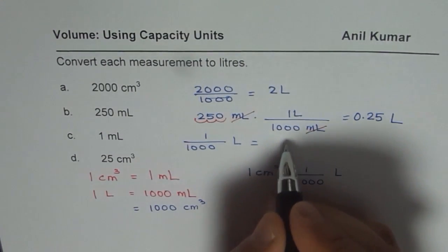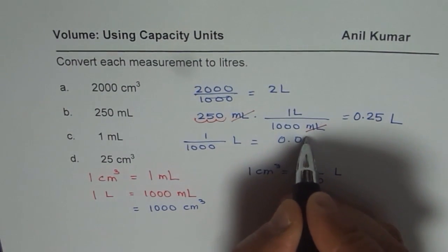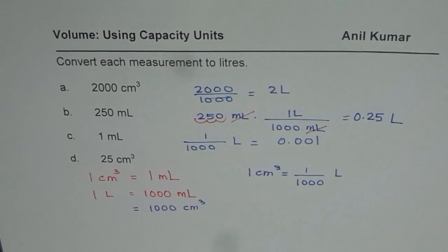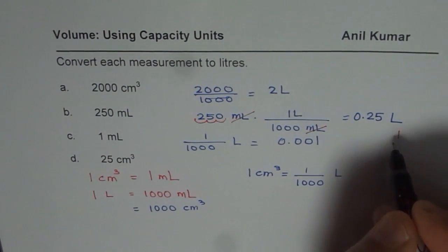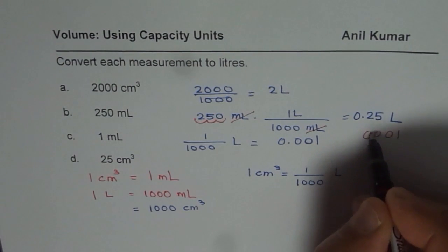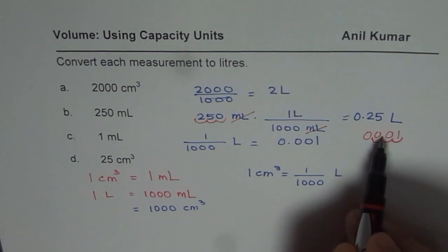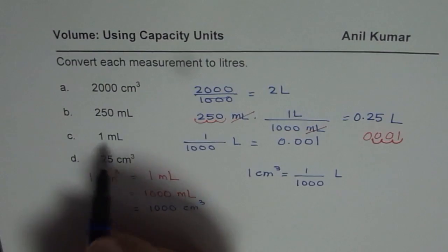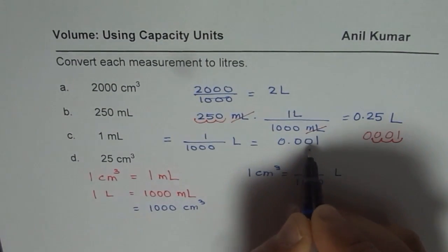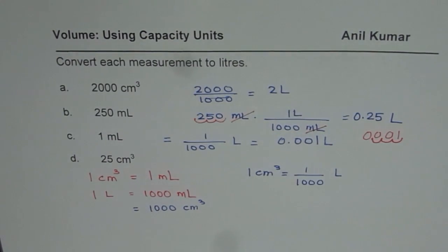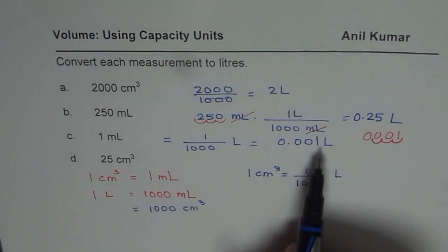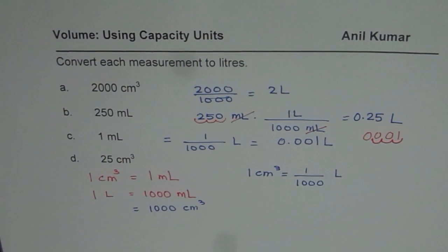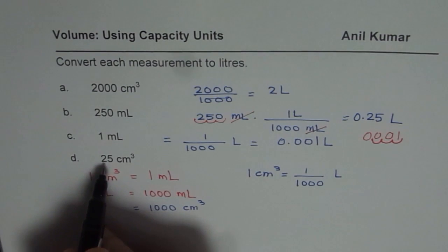Which you could write as 0.001, because if I divide one by thousand there are so many zeros here, so you are moving decimal three places - one, two, and three - so you get two zeros and then one. So one milliliter is equal to 0.001 liters. You can always check your answer - if you multiply by thousand do you get one? That's a good way of checking your answer.